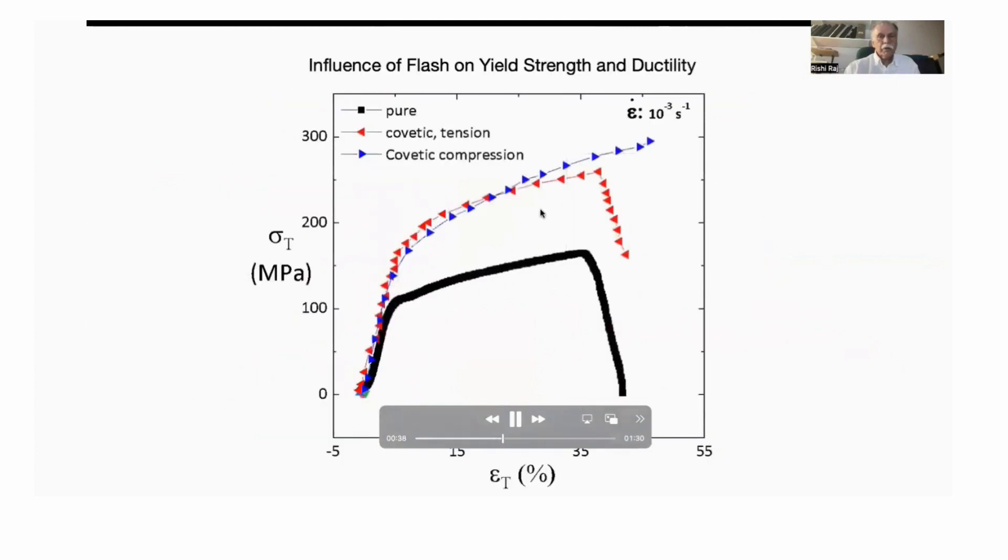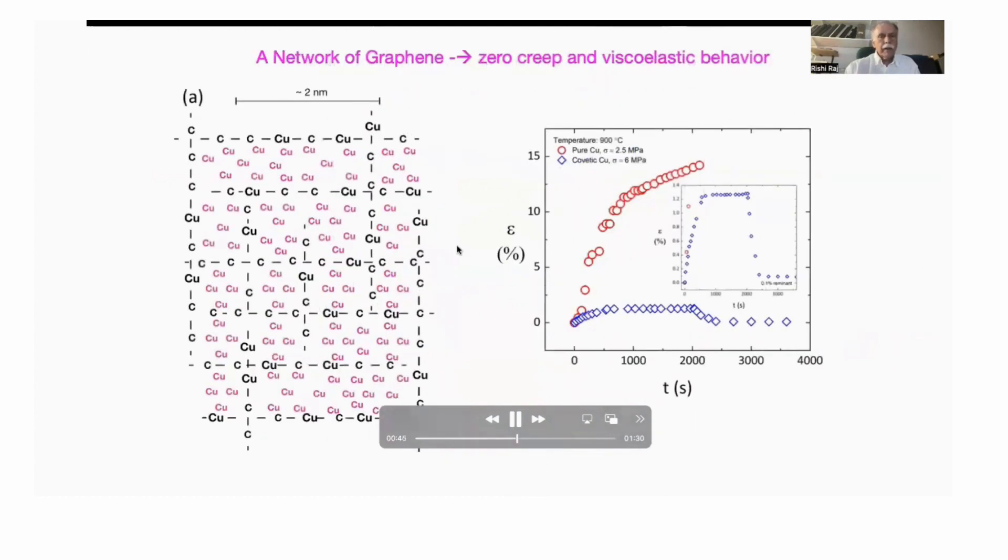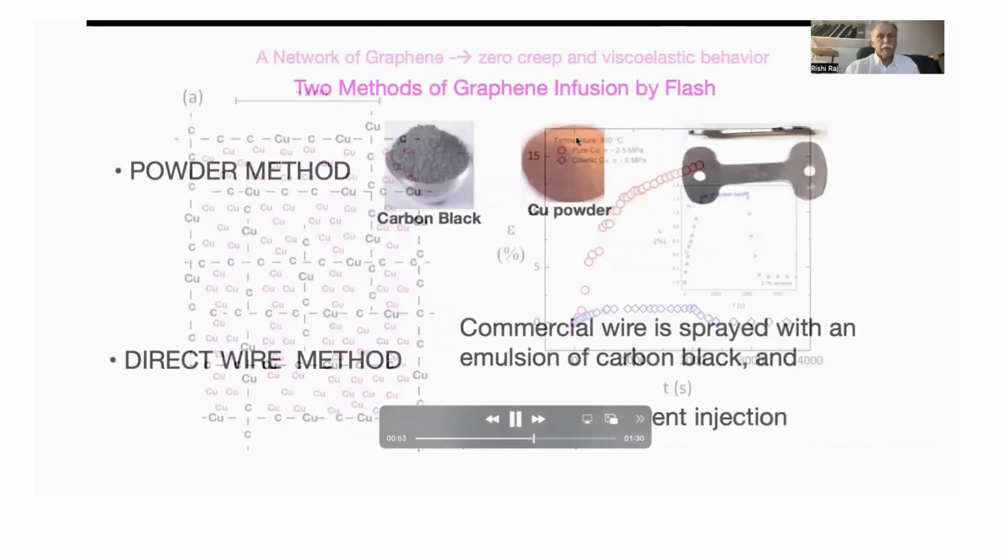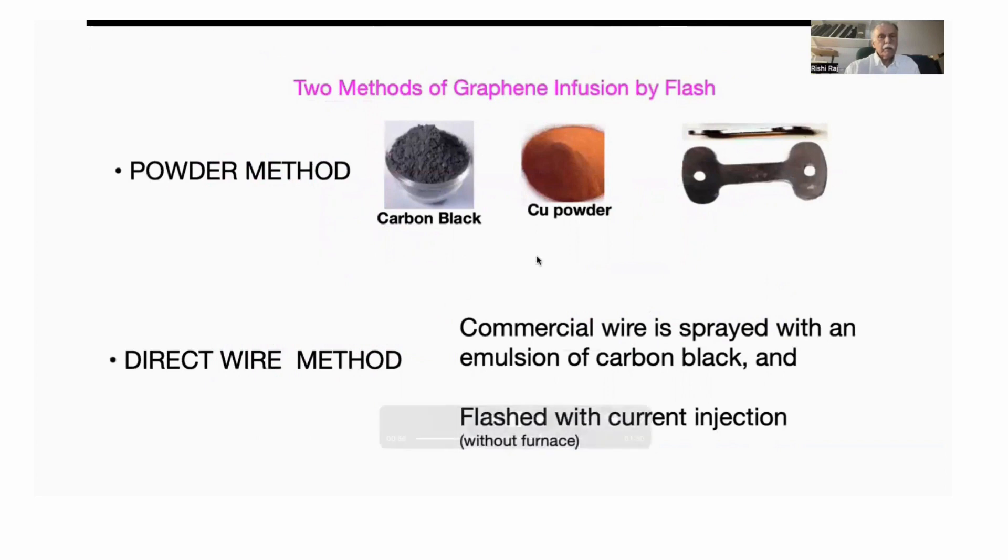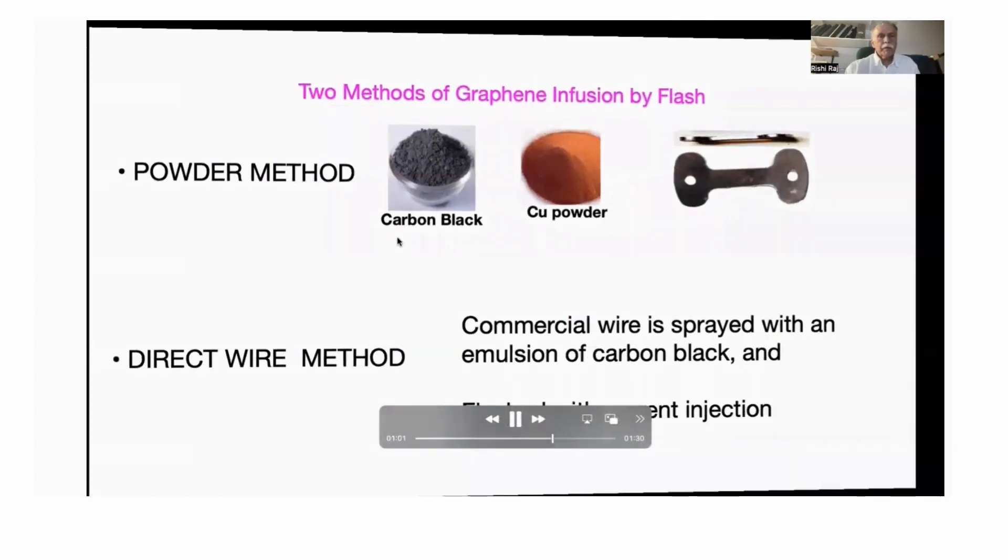And here we show that the yield strength of the graphene infused copper is actually higher than that of nominal copper. And here we see that actually the material becomes viscoelastic at very high temperature, 900 degrees C. And here you see how we did the two methods to make these graphene infused copper.